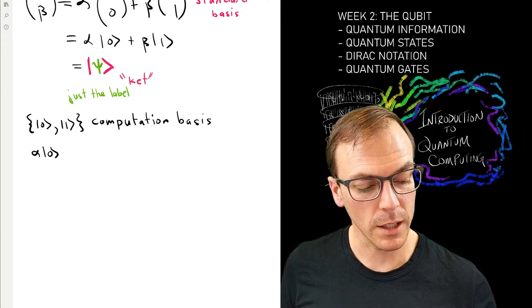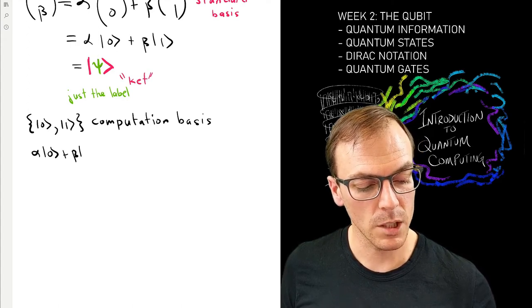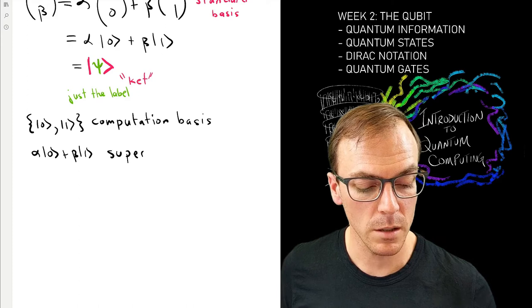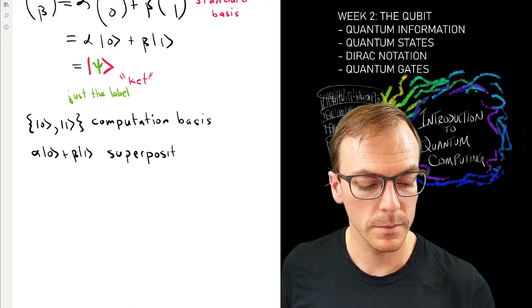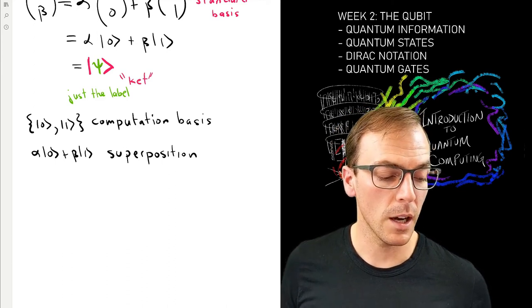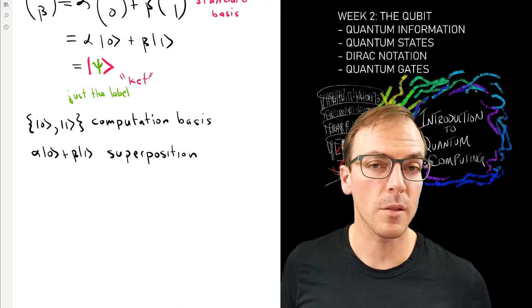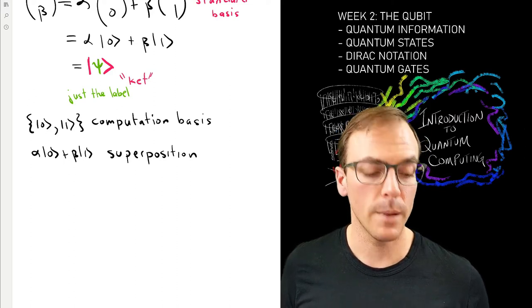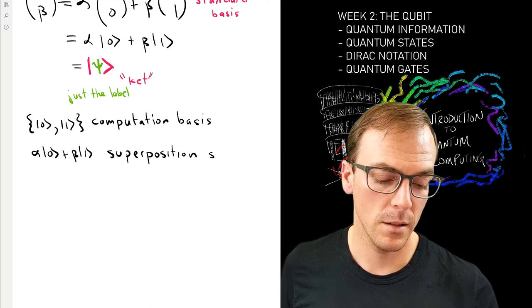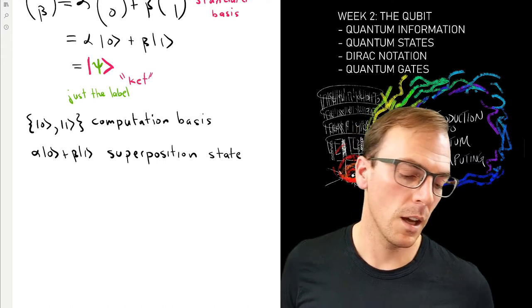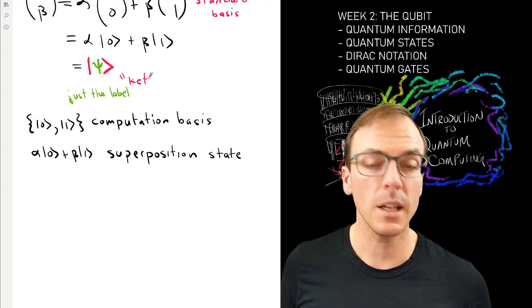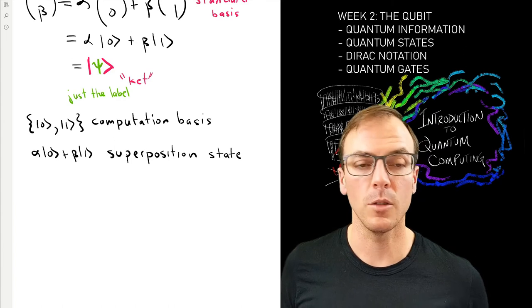If we have some vector which can be written as a linear combination in this particular basis, then that's called a superposition. Remember, when we specify a particular vector inside of this two-dimensional complex vector space, that is the state of the qubit. So this object is called a superposition state.